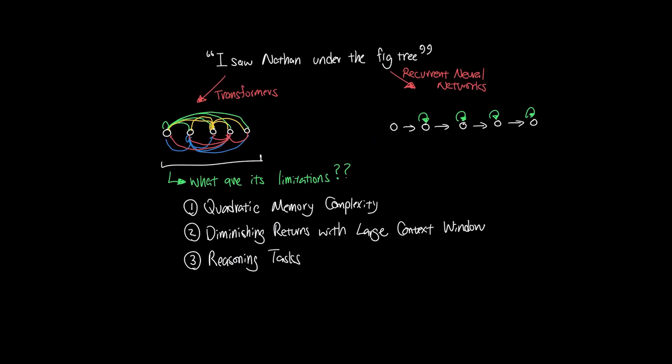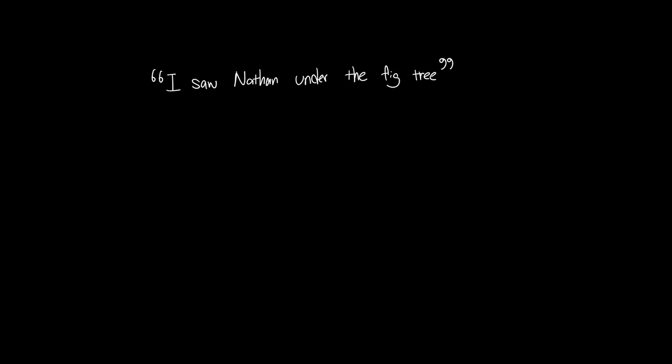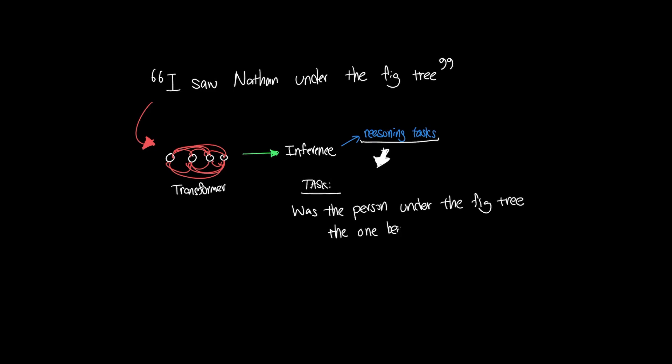Moving on to another weakness: reasoning tasks. Let's say the sentence I saw Nathan under the fig tree was encoded by a Transformer. Let's say you wanted to ask a simple question like, was the person under the fig tree the one being seen or the one doing the seeing?